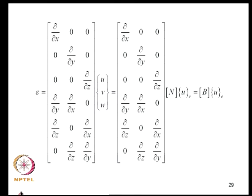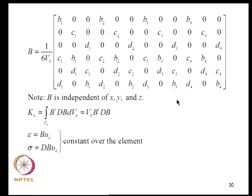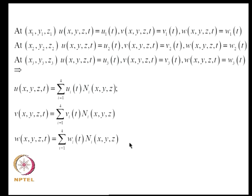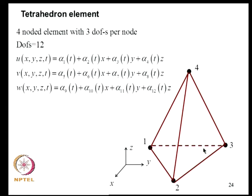Since B is constant, the stiffness matrix K_E = ∫ B^T D B dV requires no numerical quadrature and can be evaluated exactly. Stress σ = D·B·U_E is also constant over the element volume. The tetrahedron element formulation is straightforward, following the same steps as for triangle elements in 2D.